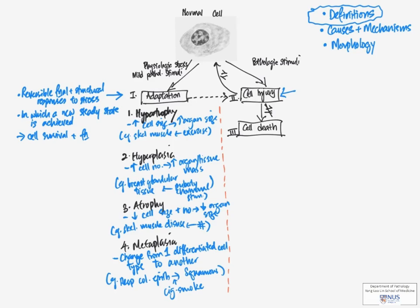Now, moving on to cell injury, this is defined as a sequence of events that occurs when the stress exceeds the ability of the cells to adapt. So they can no longer reach a steady state and then they start to show features of damage.